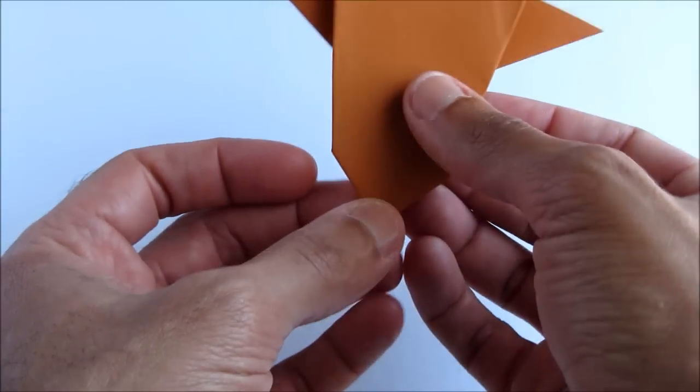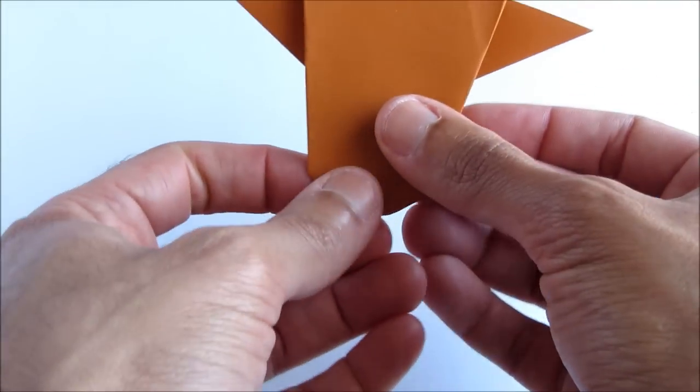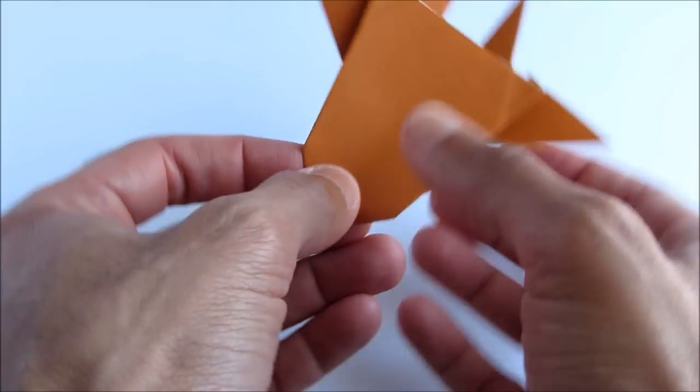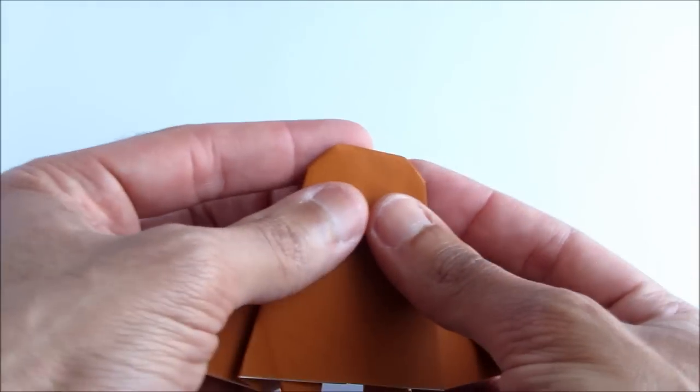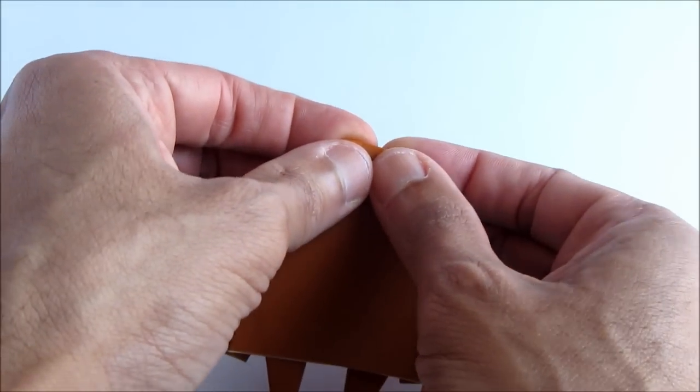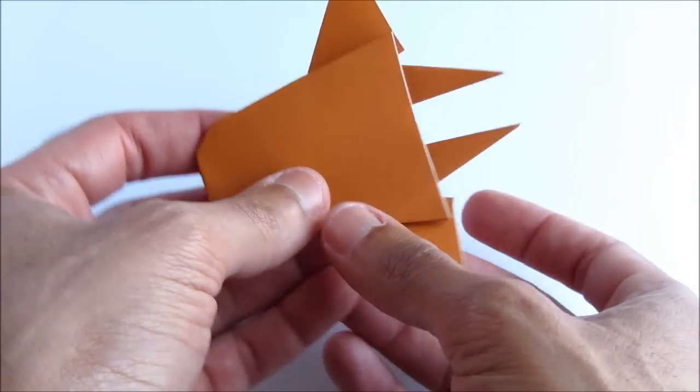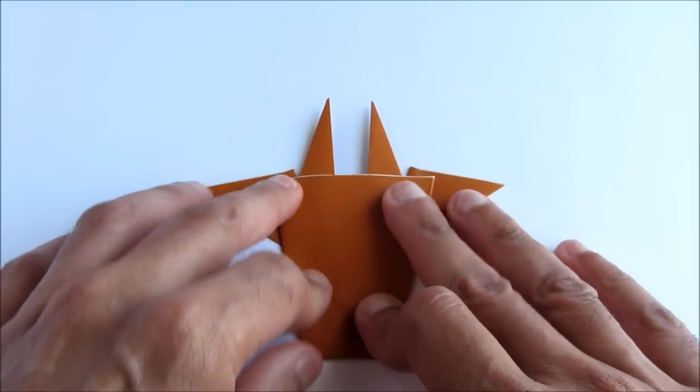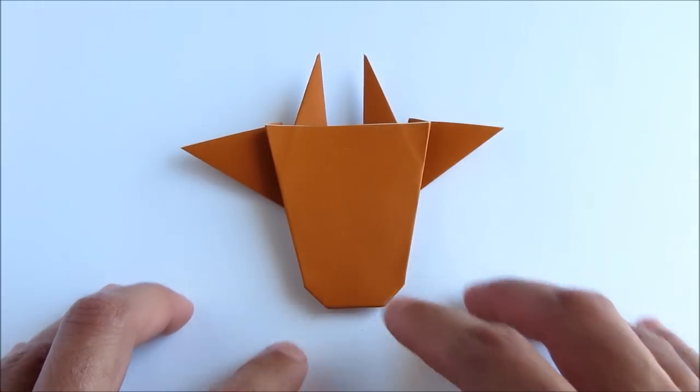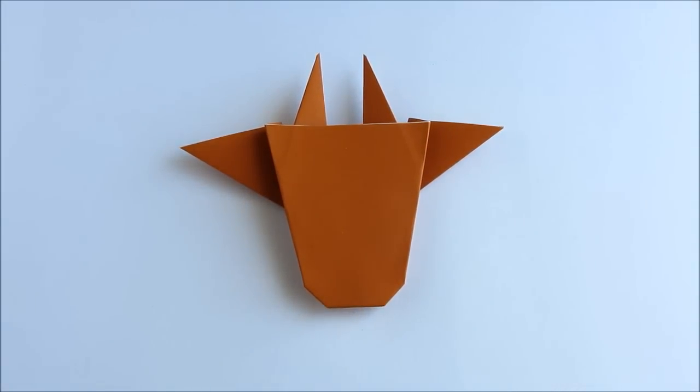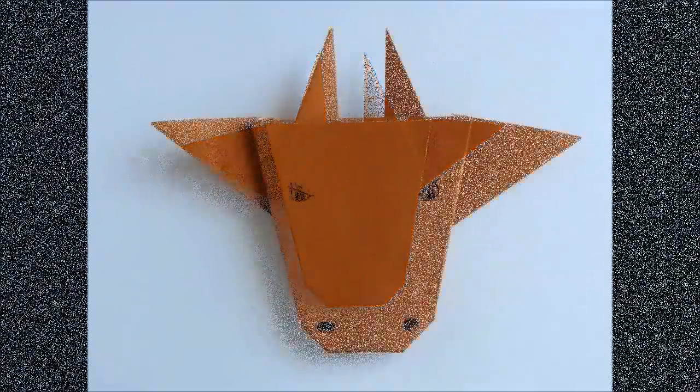Now fold up the bottom point to form the chin. And that's it. Your origami bull face is complete. Enjoy.